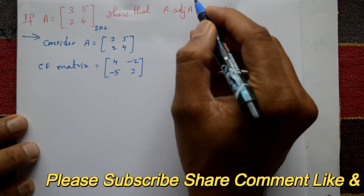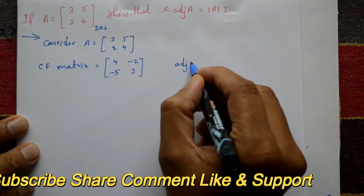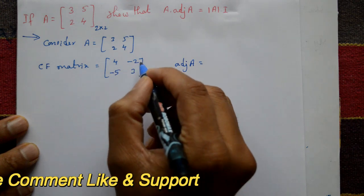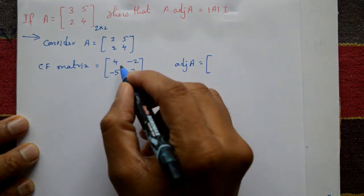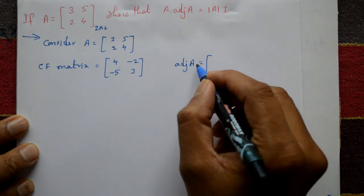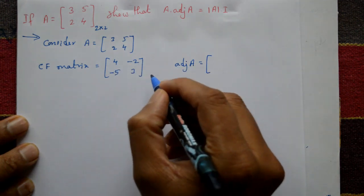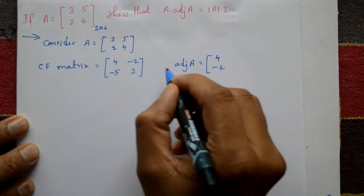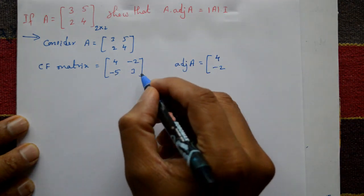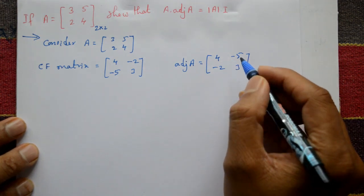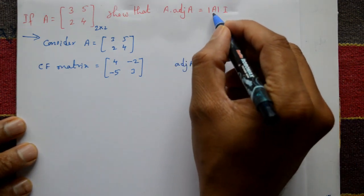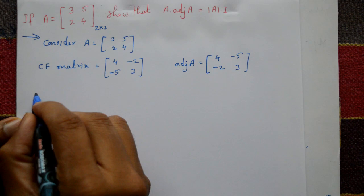Now adjoint of A is equal to change row into column or column into row. This is cofactor of matrix. Now adjoint of A, row become column: 4 minus 2, the first row means first column, second row means second column, minus 5 3. This is adjoint of A.